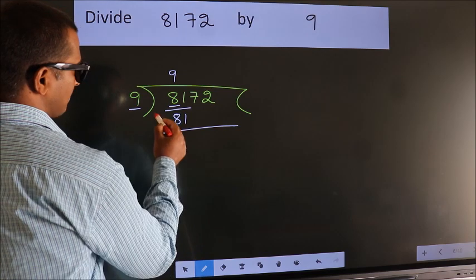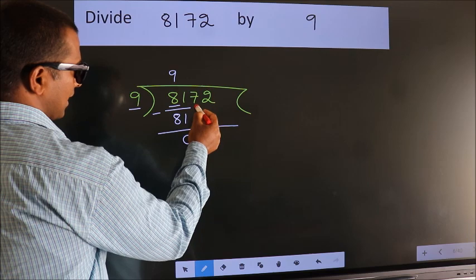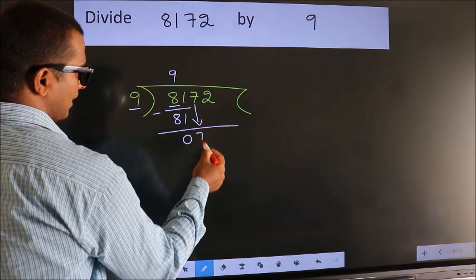Now we should subtract. We get 0. After this, bring down the beside number. So 7 down.